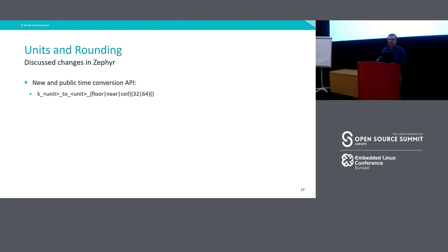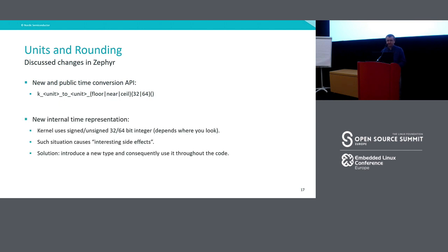So are we going to floor, ceil, or find the nearest value? The next part we have to address is changing the internal time representation in the Zephyr kernel. At the moment, all time representation is just integers, and the signedness and width of these integers depends on who wrote the code, which has some interesting side effects — some parts use signed integers, other parts treat the same value as unsigned. What we are proposing is to create a new type intended to represent time and use it in all places in the kernel where time is involved. There is currently discussion about whether this type should be signed or unsigned.